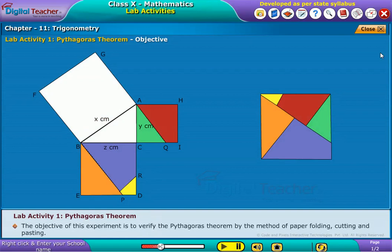The objective of this experiment is to verify the Pythagoras theorem by the method of paper folding, cutting and pasting.